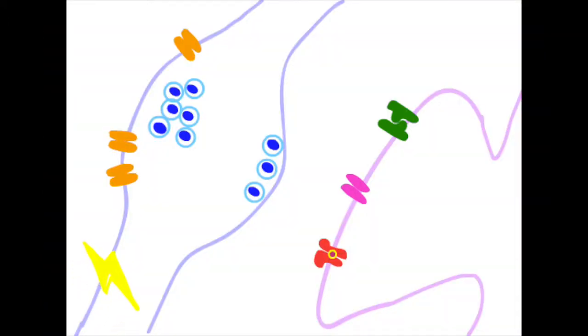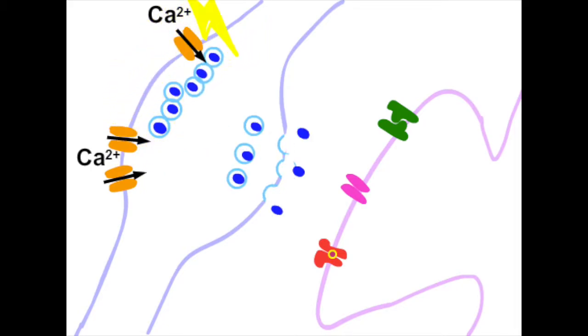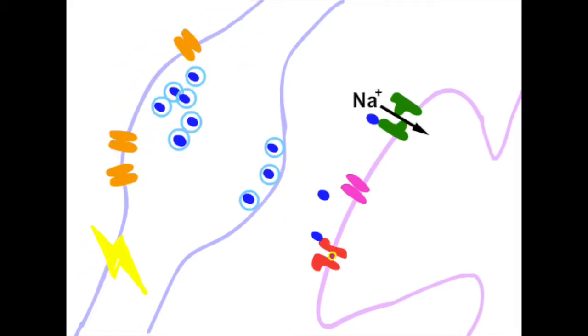During evoked release, action potentials at the presynaptic terminal elicit calcium influx and release of neurotransmitter into the synaptic space.